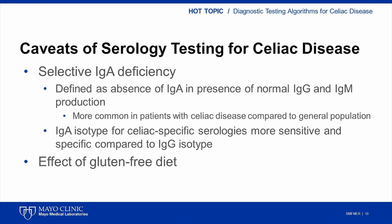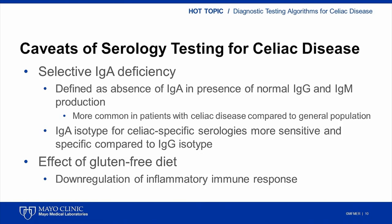The other issue that can impact the utility of serology testing is the effect of a gluten-free diet. In a patient with celiac disease, removal of gluten from the diet leads to downregulation of the inflammatory immune response, ultimately reducing autoantibody production. This is useful for monitoring patients, as decreasing concentrations of celiac-specific autoantibodies indicate a favorable response. However, if a patient is already following a gluten-free diet before diagnosis has been established, there is a risk of a false negative diagnostic serology test.